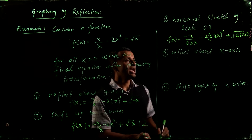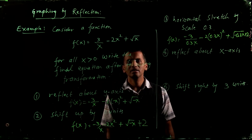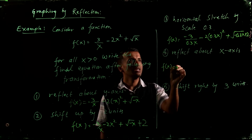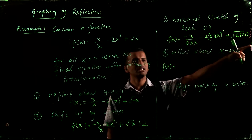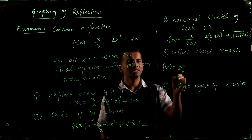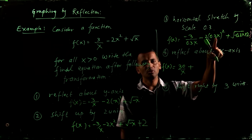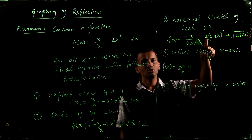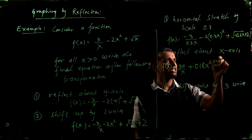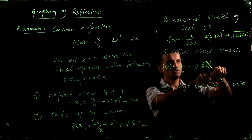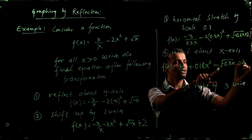Next, reflect about the x-axis — you multiply the whole right-hand side by negative 1. So 3 over 0.3 equals 30, and multiplying by negative gives 30 over x. All the signs change: 0.3 squared is 0.09, times 2 is 0.18, so you get plus 0.18x squared. The square root term becomes minus square root of negative 0.3x, and the plus 2 becomes minus 2.